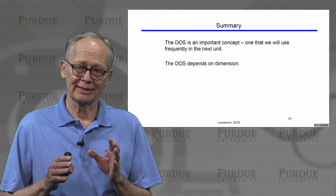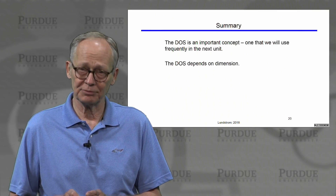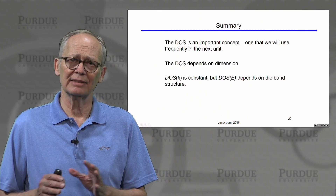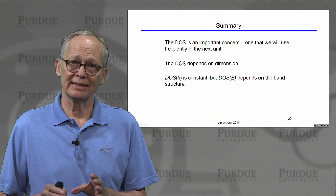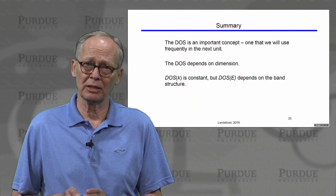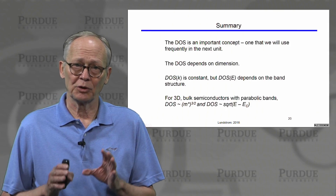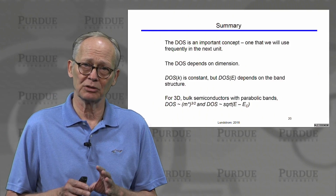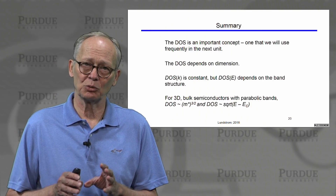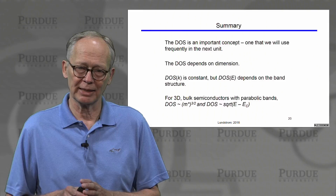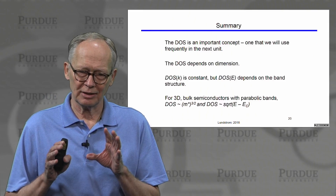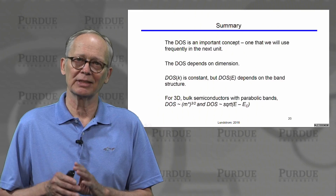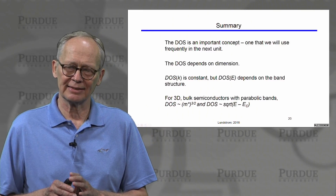We've covered a lot of ground and introduced this important quantity we'll need throughout the course. The density of states depends on the dimension of the semiconductor — 1D, 2D, and 3D give different results. The density of states in k-space is constant and independent of band structure, but in energy space it depends on band structure. For 3D bulk semiconductors with parabolic bands, remember it is proportional to the 3/2 power of effective mass and to the square root of energy above the conduction band bottom.